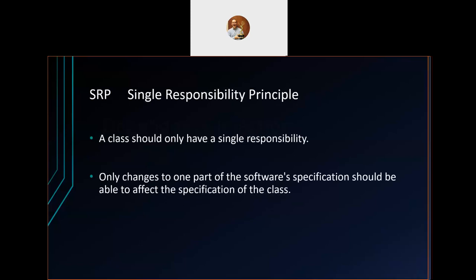Single Responsibility means a class should have a single responsibility. The biggest sign you're not doing this is a so-called god class that does everything — it has many methods that are not coherent, serving multiple purposes. If we change only one aspect of the software specification, it should only affect the specification of a single class.